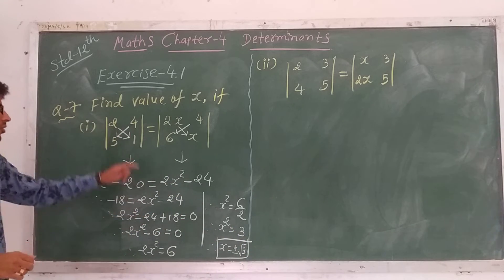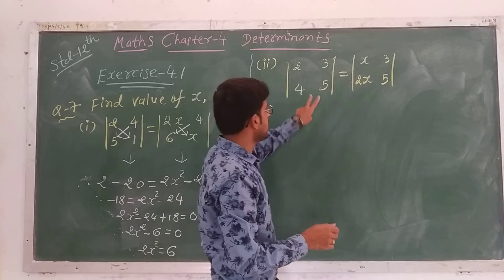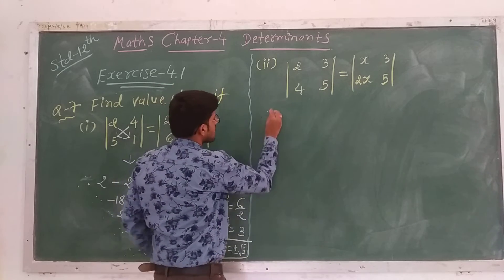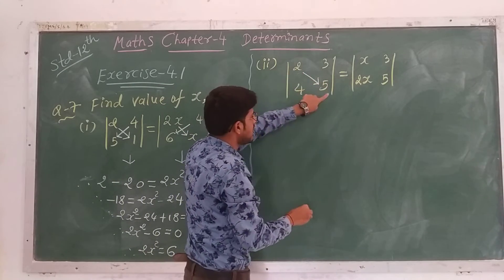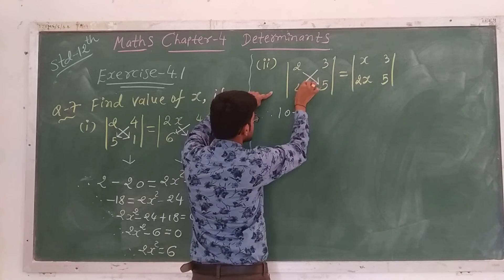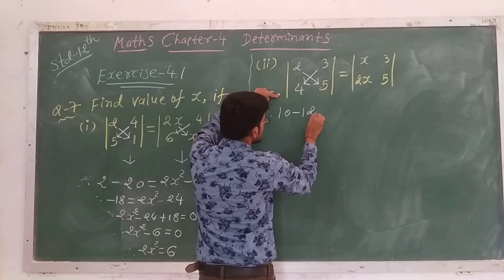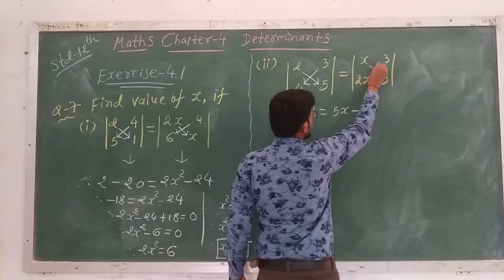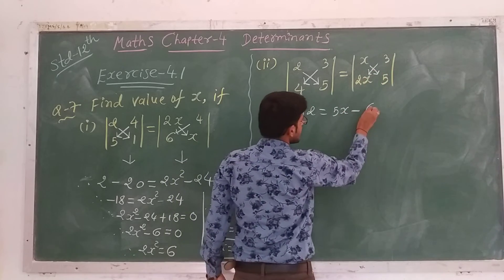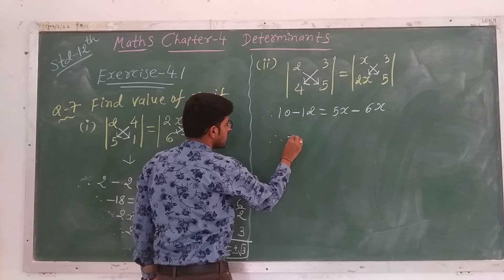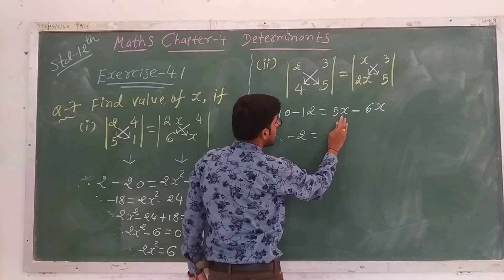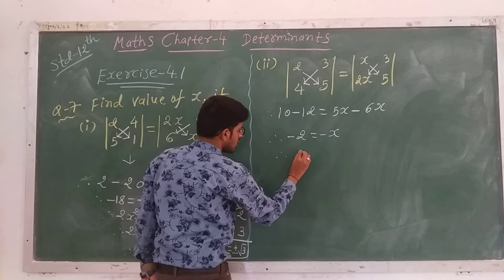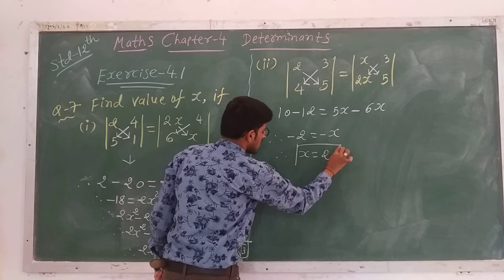For part 2 of question 7, we again find the LHS and RHS determinants individually and compare. LHS: principal diagonal 2y × z gives a value; secondary diagonal 4 × 3 = 12. RHS: principal diagonal 5x, secondary diagonal 3 × 2 = 6x. So 10 - 12 = -2 equals 5x - 6x = -x. Therefore the value of x is equal to 2.